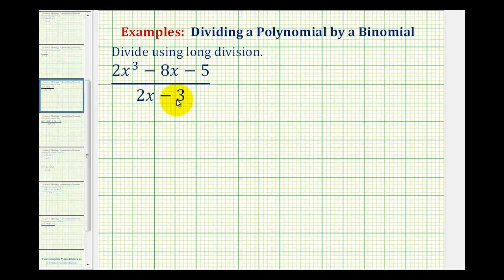Notice how the terms are already in descending order, meaning from highest degree to lowest degree. But notice how the numerator does not have an x squared term. So when writing this out, we're going to write 2x cubed plus 0x squared minus 8x minus 5.